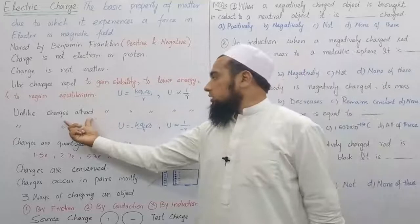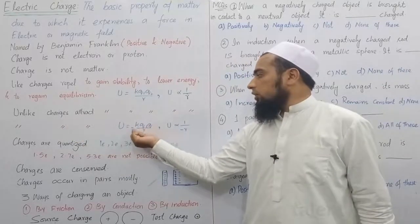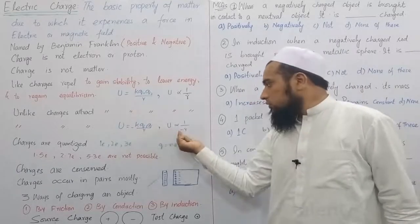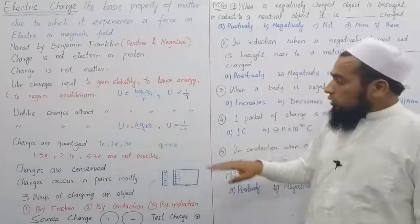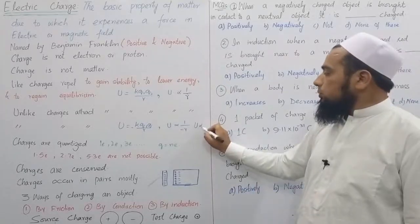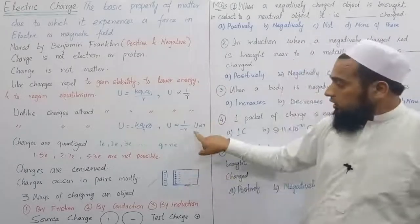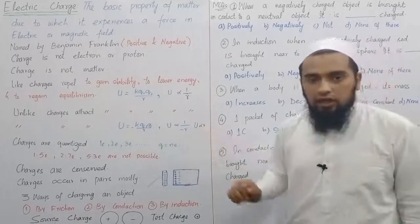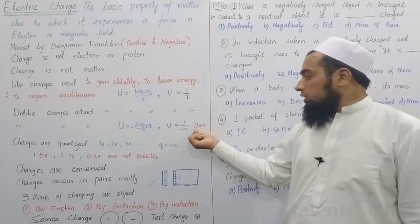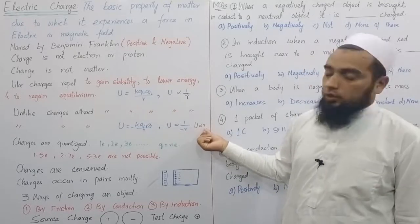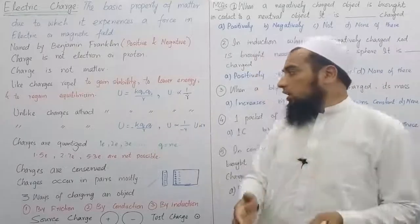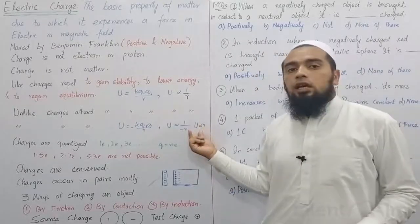For unlike charges, when you place positive and negative, the result is negative. U is inversely proportional to negative r, and transferring the minus gives U proportional to r. If you want to reduce energy, you must reduce the distance — direct proportionality. So if energy is to be reduced, r must decrease, meaning the charges come closer — they attract each other.